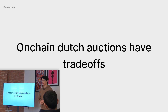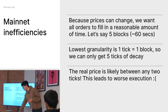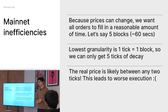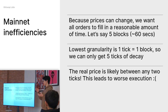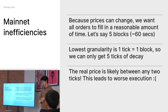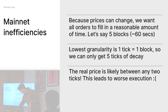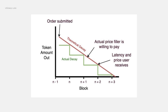One thing touched on is that mainnet is not ideal — it's expensive, 12 seconds per block. Let's say we want a swap to happen in about a minute — that gives us only five blocks of decay. The way we run the on-chain auction is that every block, we have some resolved amount along a decay curve. With only five blocks, that's not very granular. The real fair market price is very likely between two blocks. This leads to slightly worse execution. This is a diagram showing what that looks like — the current decay on-chain is more of a stepwise function.